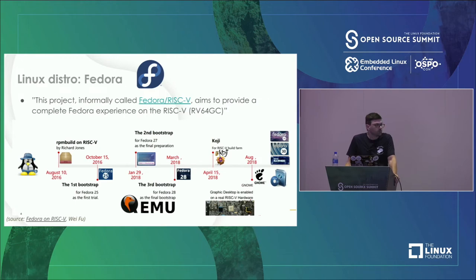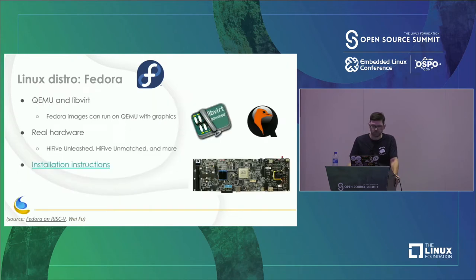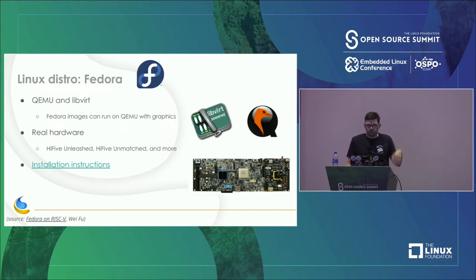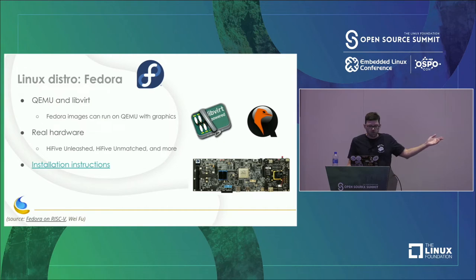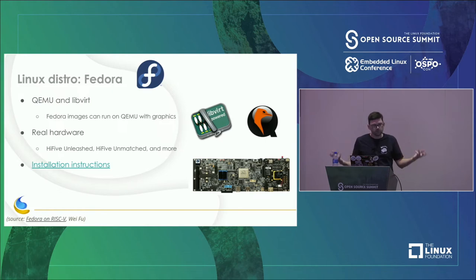There is support in several binary distros including Fedora, which aims to have a complete Fedora experience on RISC-V and has been working on it for several years. You can download a Fedora image and run it with QEMU and libvirt, including a full graphical environment. They also support real hardware — most of the dev boards that are out there. Though it's not official Fedora yet, technically it's a remix because it's not an official architecture.